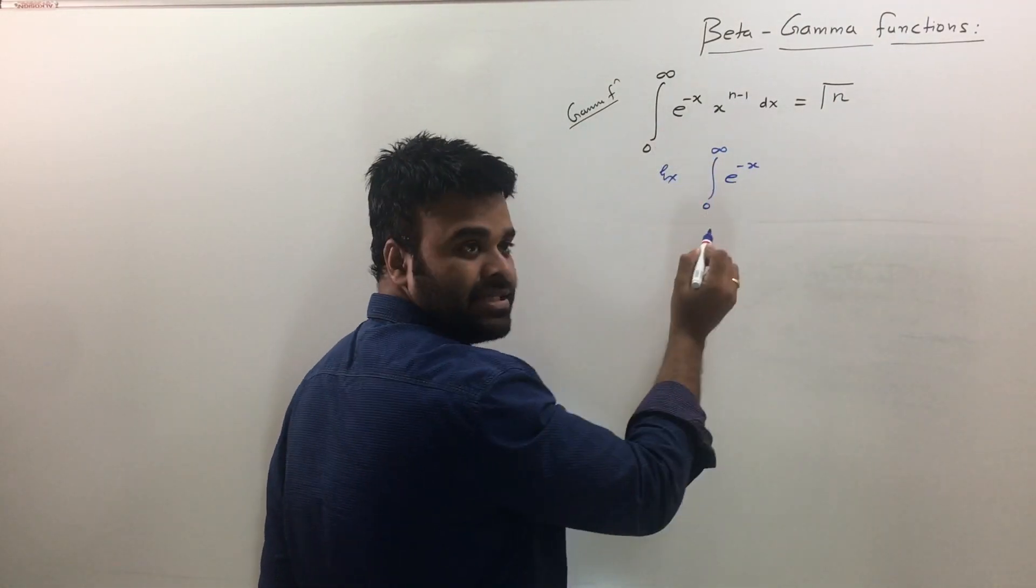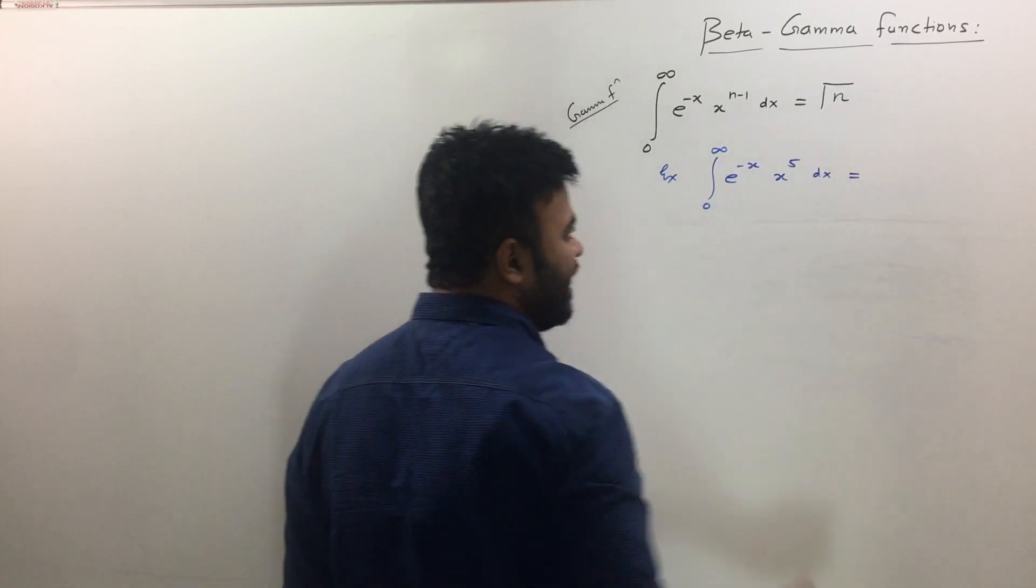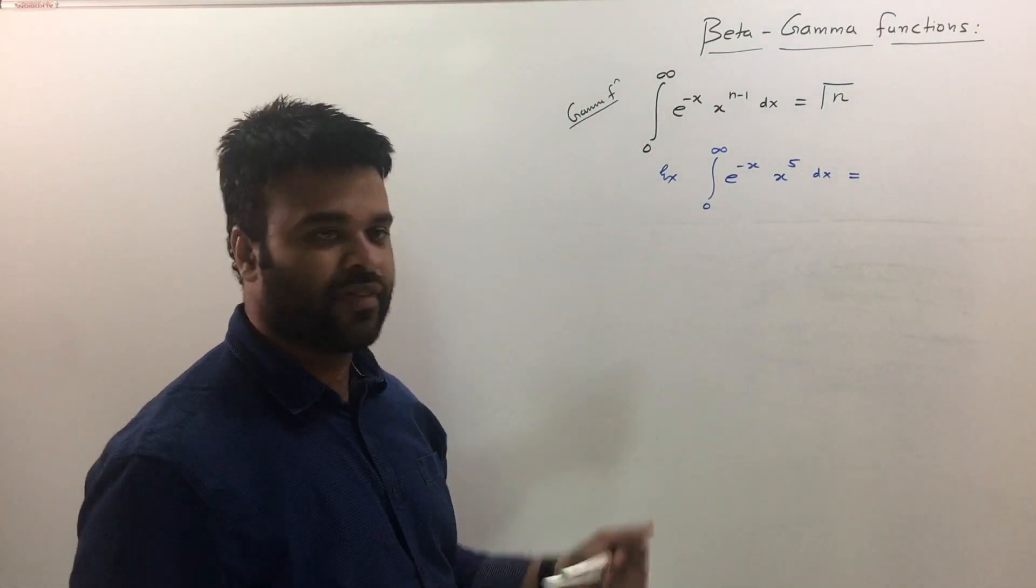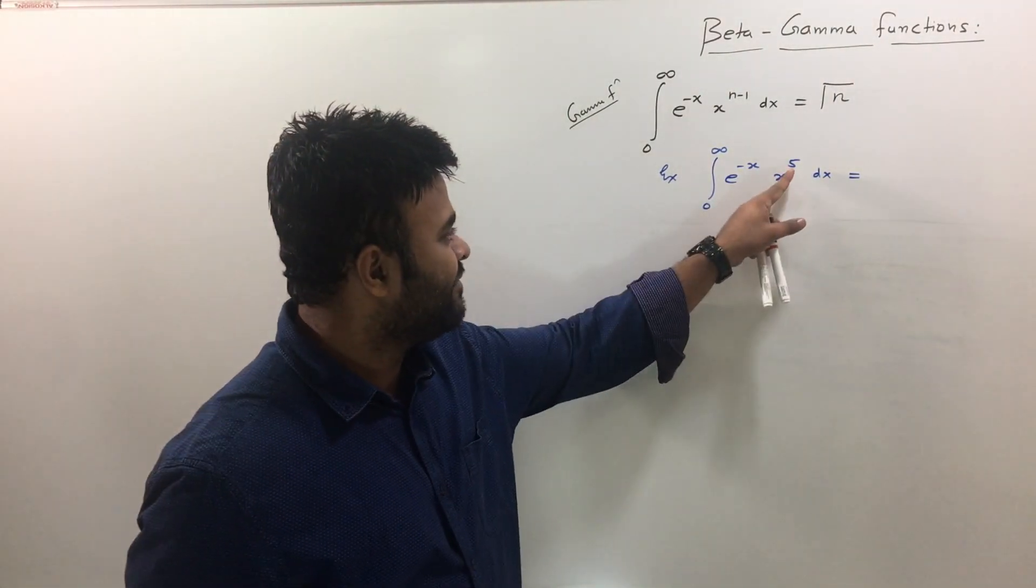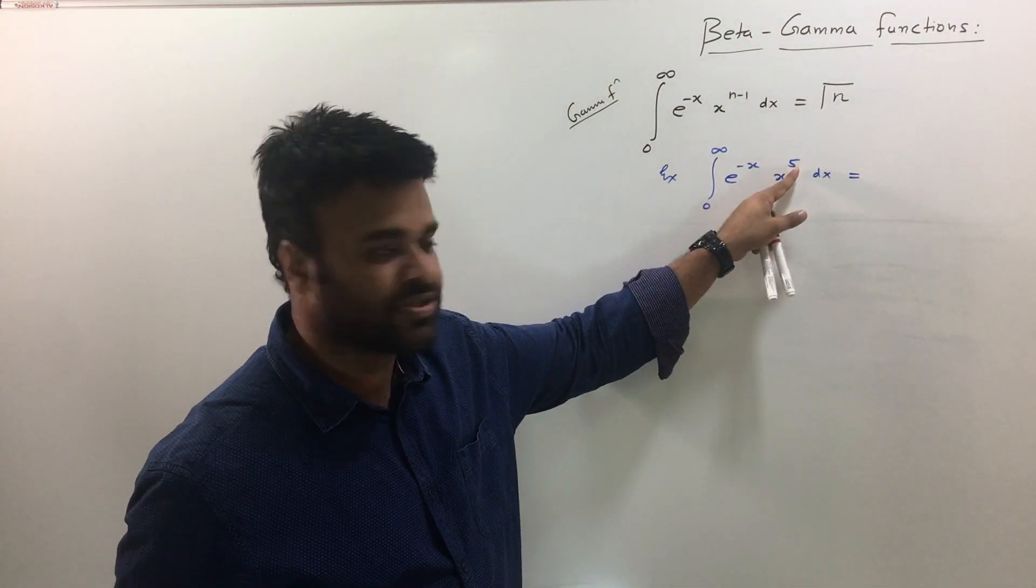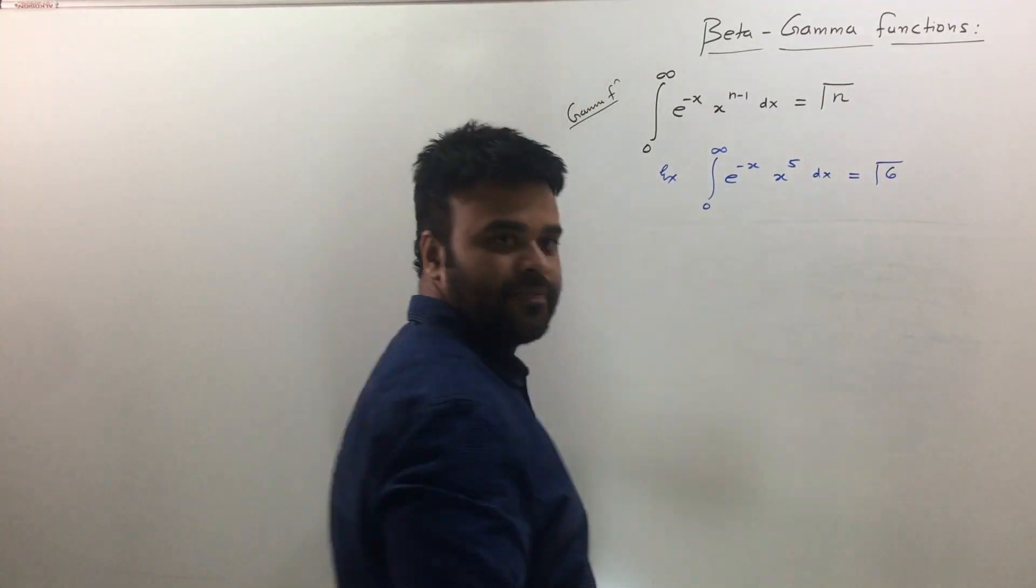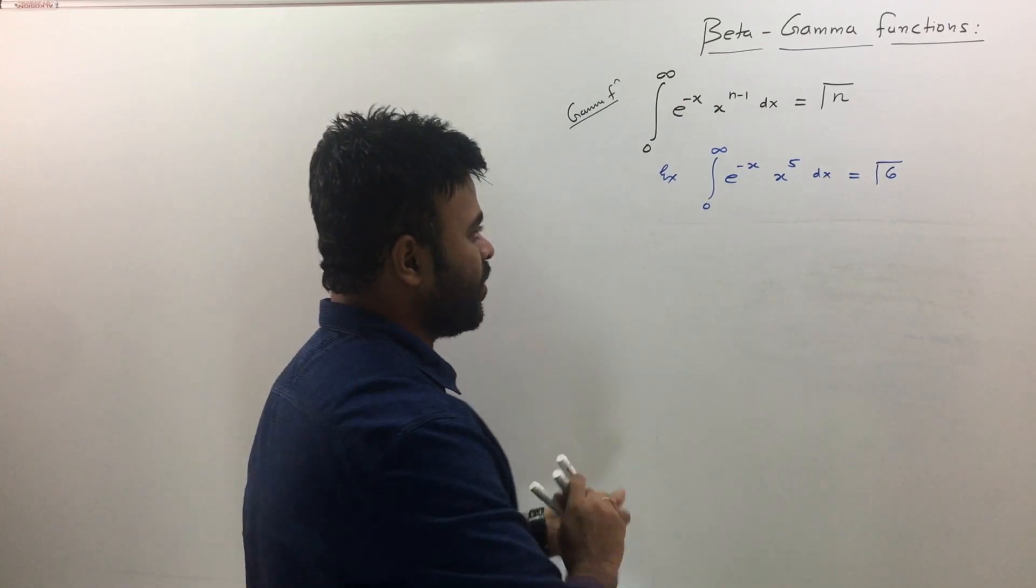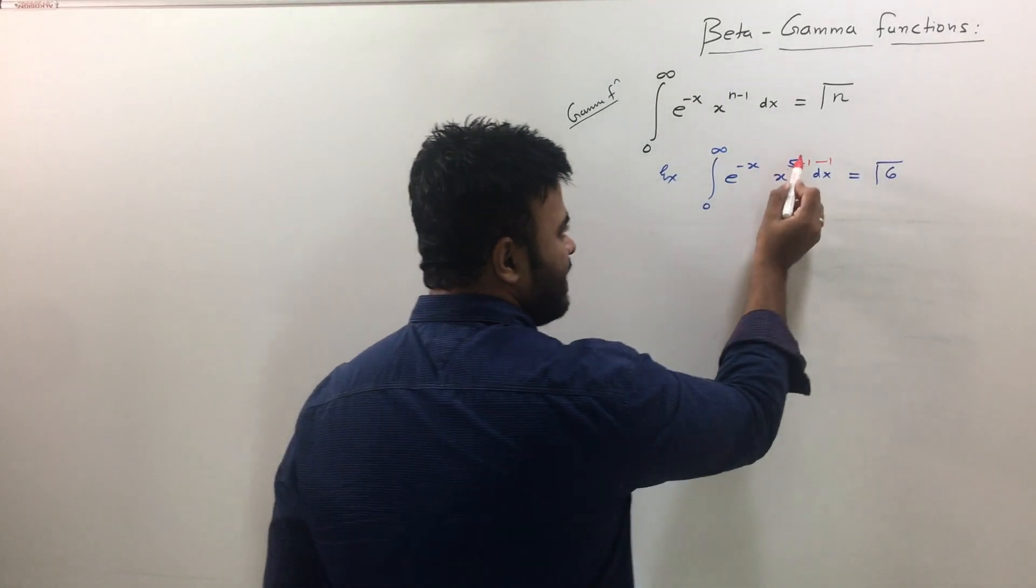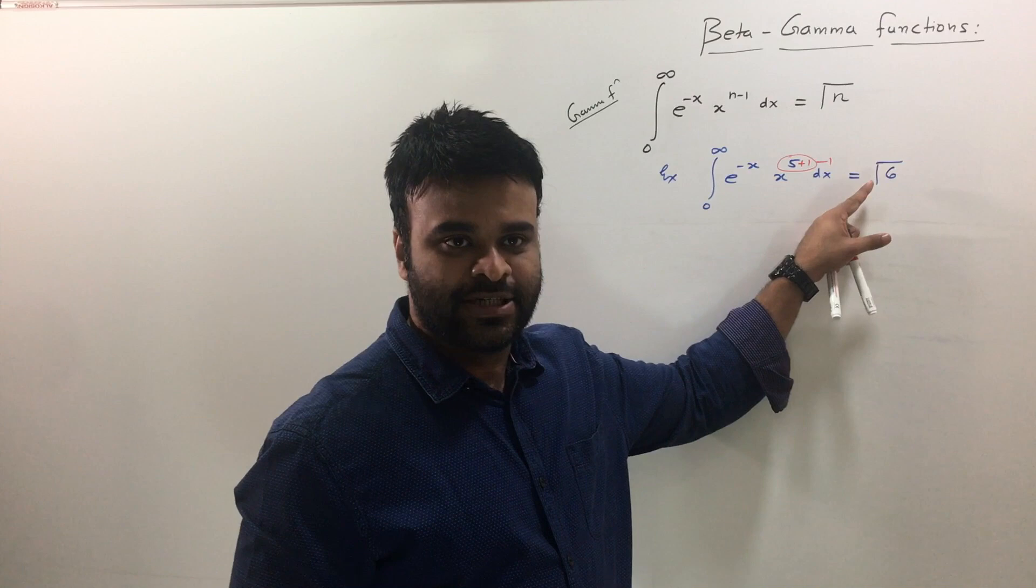E raised to minus x, that's matching. And if you have say x raised to 5 dx. Now for this integration you can just write down answer directly. You don't have to solve this and 5 is nothing but 6 minus 1. So just to make it match n minus 1, I will write 5 as 6 minus 1 which is gamma 6. The technique is you can always add 1 and subtract 1, and you see 5 plus 1 is 6.